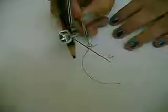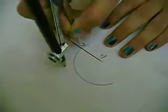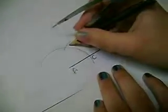Then without changing the radius of our compass, we will put the point of our compass on C and make an arc intersecting the previous arc. We can name the point of intersection here as D.